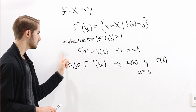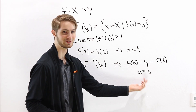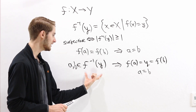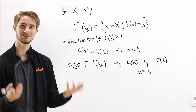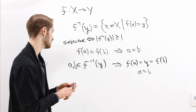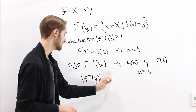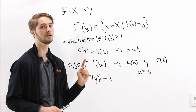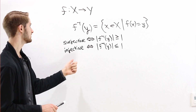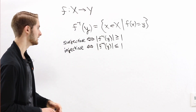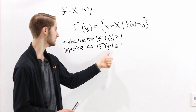So we've shown that if a and b are both in the preimage of y, then a equals b. We can't have two distinct elements in the preimage, because any two elements are always equal. So the preimage can have at most one element. We write this as the size of f inverse of y being less than or equal to 1. This preimage has at most one element if f is injective.